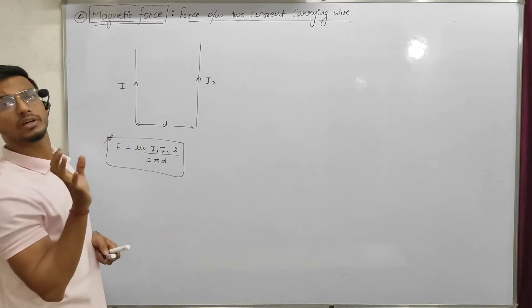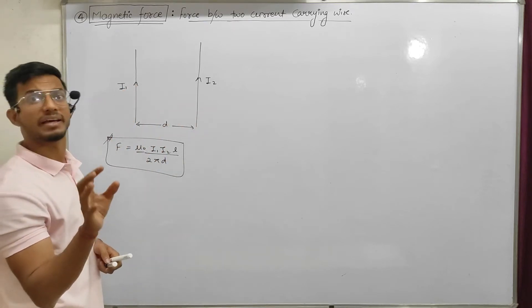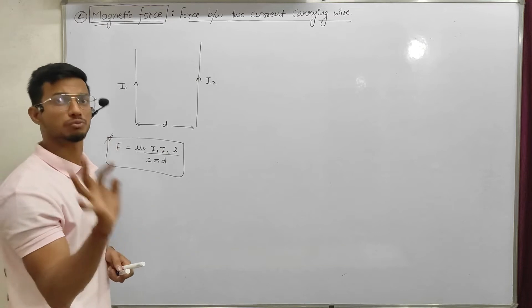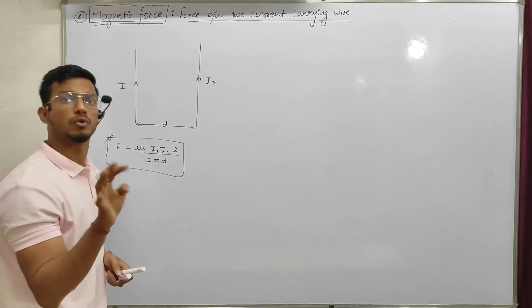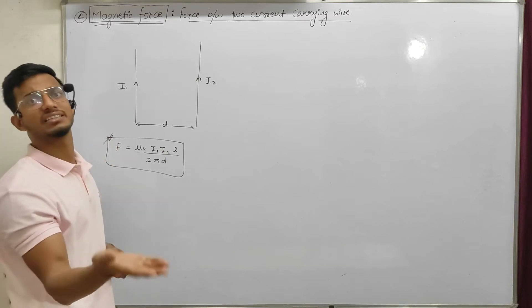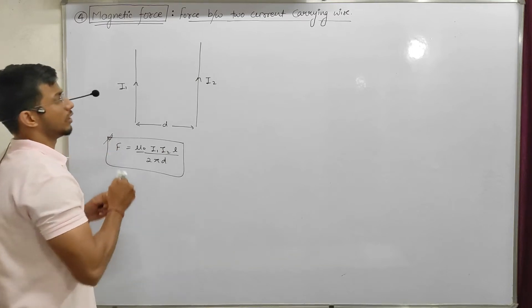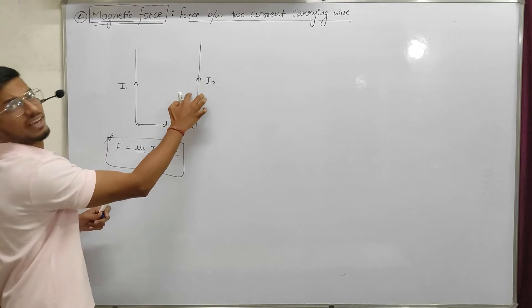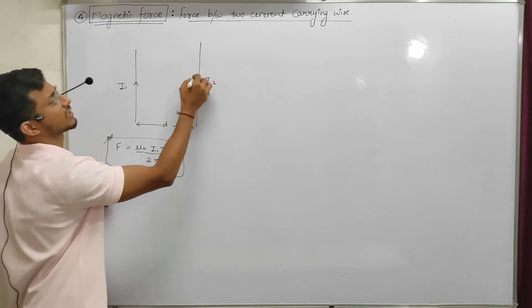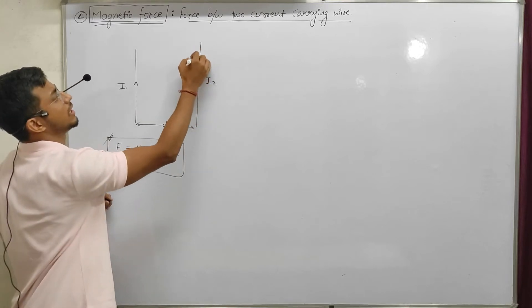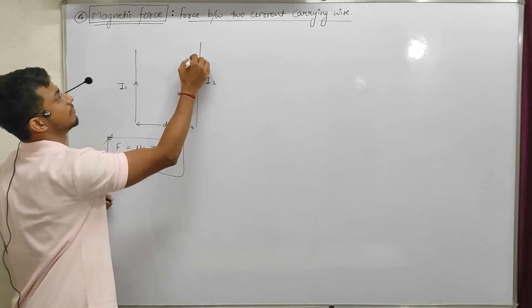The simple thing we know is that whenever there is a current-carrying wire in a magnetic field, it will experience a force. How much force? F = BIL sinθ.